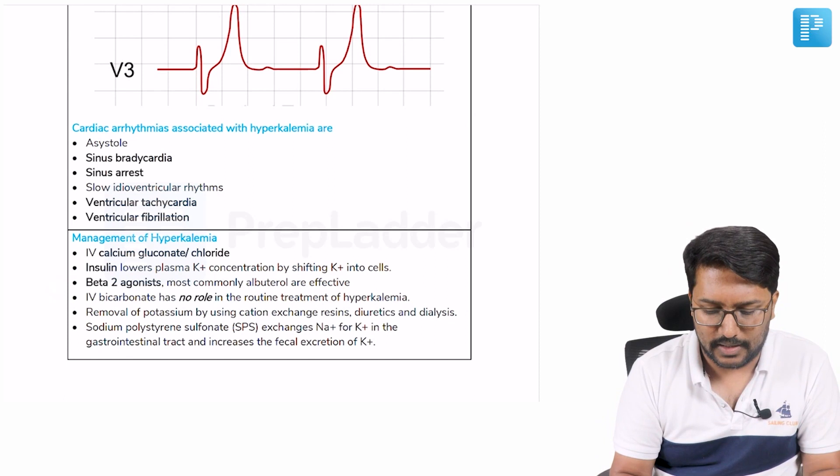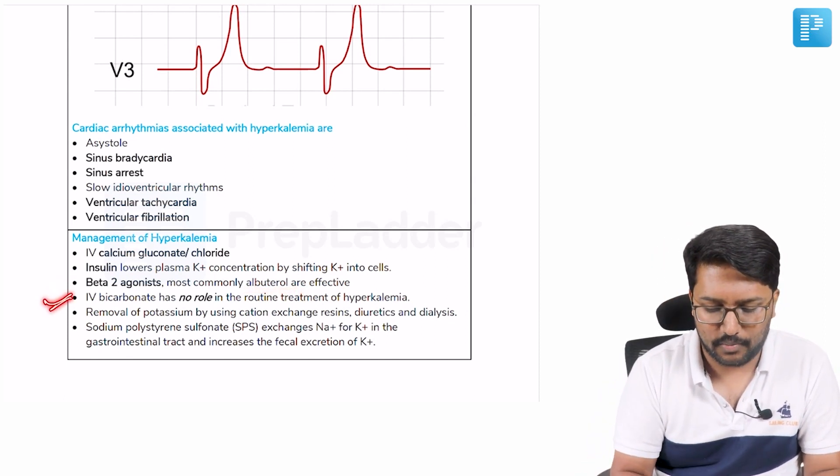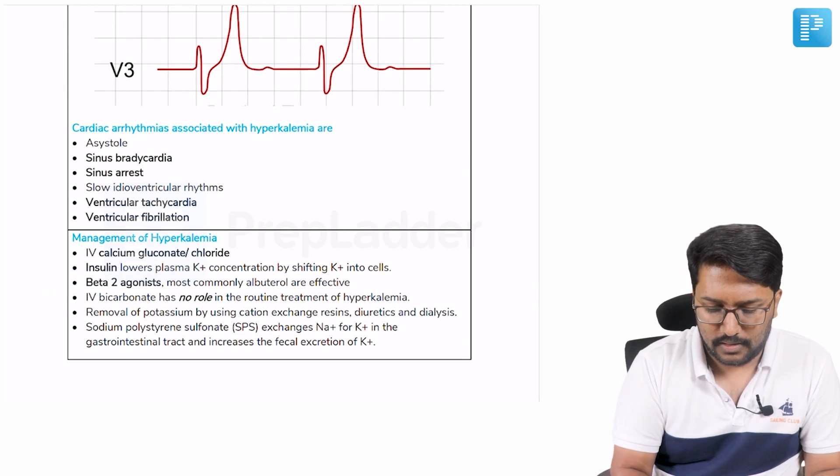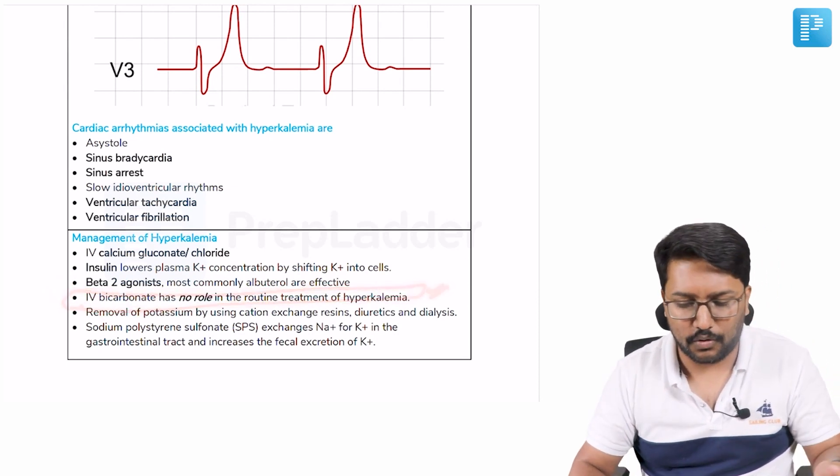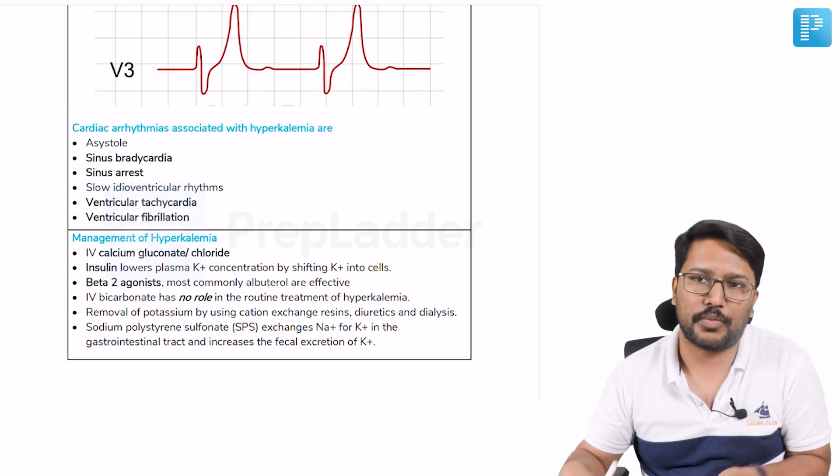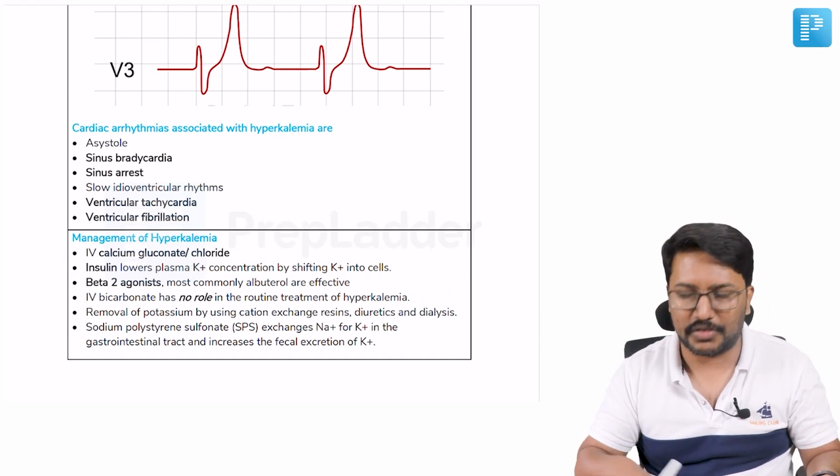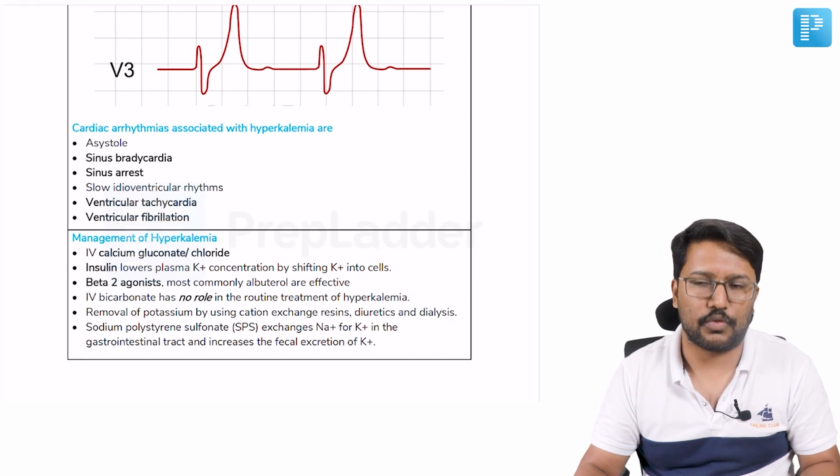Then we give beta-2 agonists like salbutamol or albuterol, and then IV bicarbonate. IV bicarbonate has no particular role in the treatment of hyperkalemia, but hyperkalemia is very frequently encountered in patients with renal failure where severe acidosis in patients not going for dialysis might have to be corrected with bicarbonate.